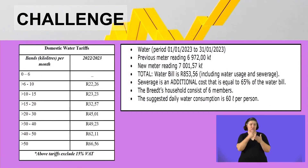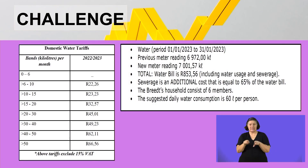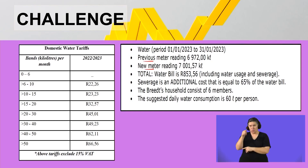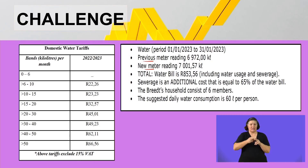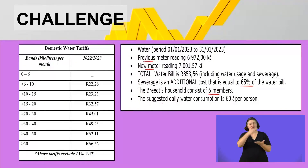The information given includes the domestic water tariffs that indicate the rates — how much you'll pay in each category. On the right-hand side we have the water period, the previous meter reading, and the new meter reading, then the total bill including water usage and sewerage. Note that sewerage is an additional cost equal to 65% of the water bill. The Breard household consists of six members and the suggested daily water consumption is 60 liters per person.